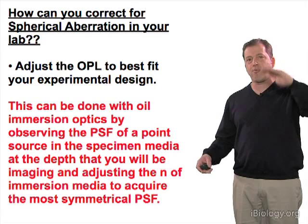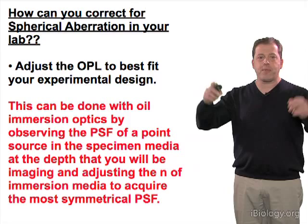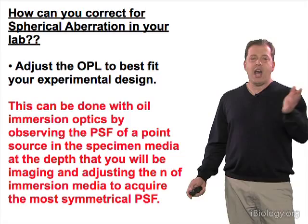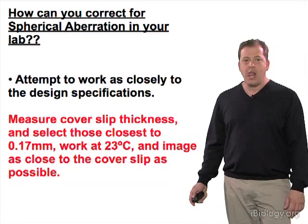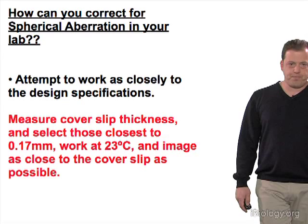The best correction is found when, focusing through up and down, you have the best symmetry of in and out of focus light. You can use immersion media to correct for spherical aberration, and oftentimes that works pretty well, though it's a bit tedious and can be a little messy.